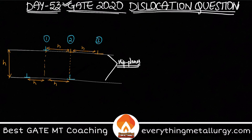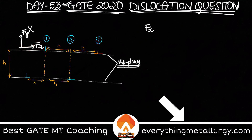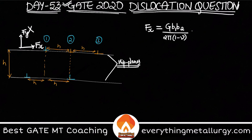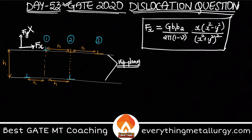Let's go to the concept of forces between dislocations. The important component is Fx — the force involved in gliding, which is the direction of movement. Fx equals G·b1·b2 divided by 2π(1−ν), multiplied by x·(x²−y²) divided by (x²+y²)².